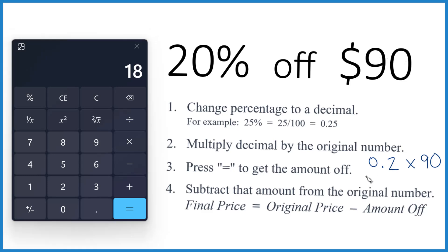So that $18 is how much off we're going to get when we get 20% off $90. If you want the final price, you take the original, that's the 90, minus how much off, how much you saved, which is 18.